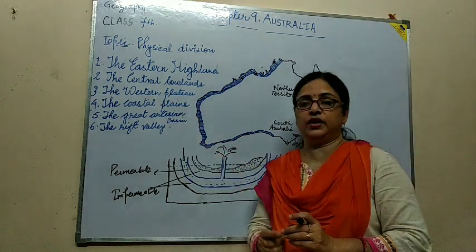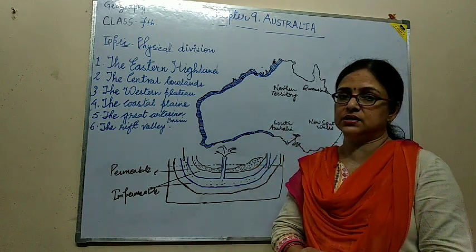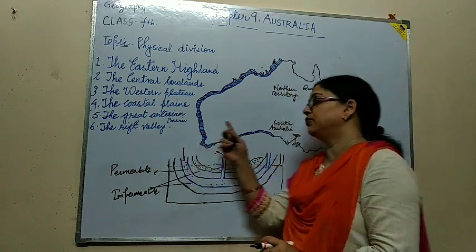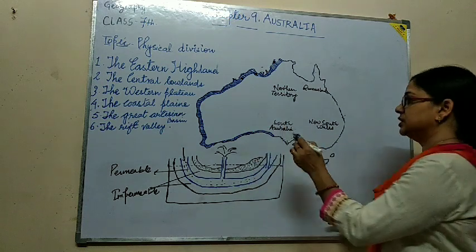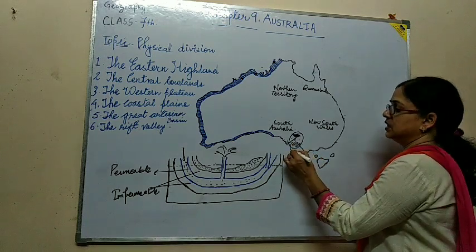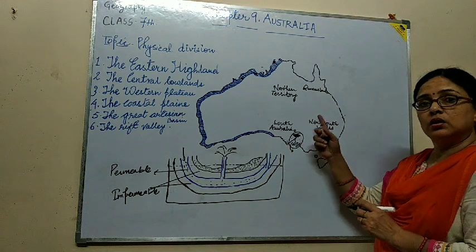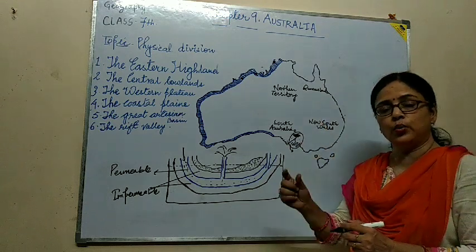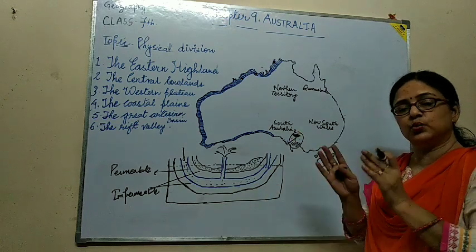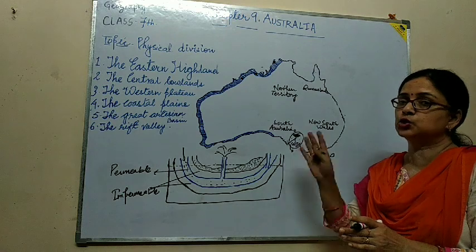Next one is the Rift Valley. If you remember, you already read about Rift Valley in Class 6 — it is the result of Block Mountain. When we talk about the rift valley as concerned with Australia, this is the region of rift valley in the south of Australia. This is the Gulf of Spencer. Here Lake Torrance is there, and this is the region of rift valley. It is a long valley which has steep sides and plains within it. It is world famous and popular for its tourist attraction.